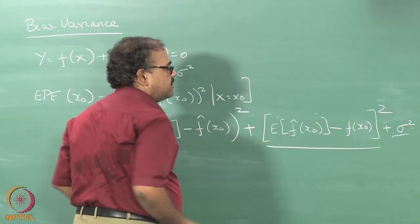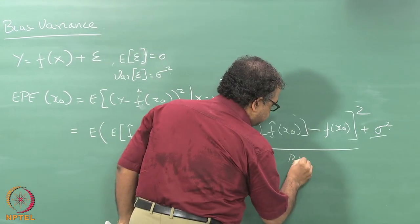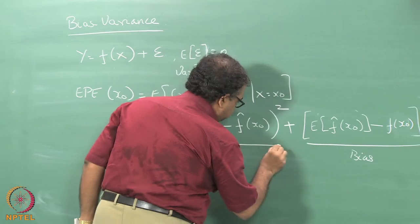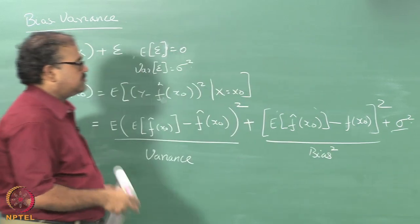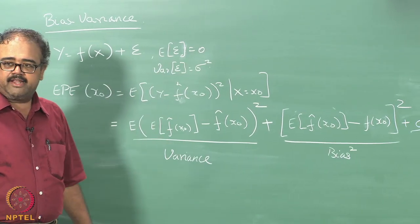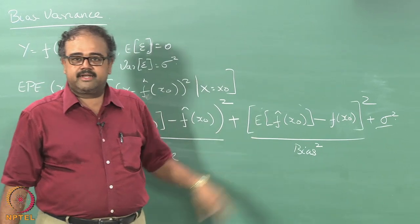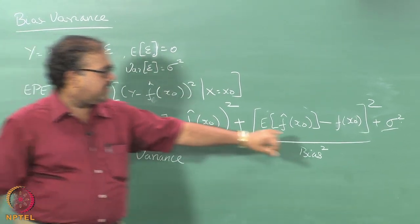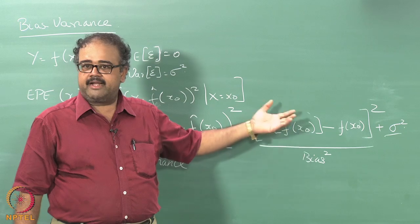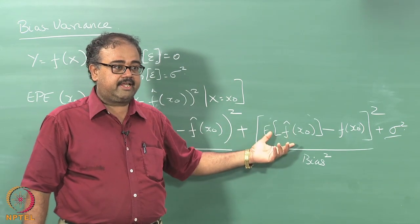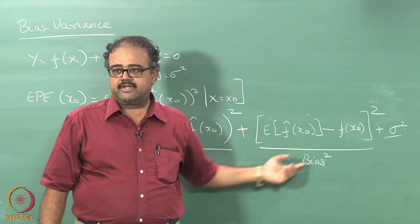This first term is typically called the variance of the estimator f-hat. This other term is called the bias of the estimator f-hat. One way to think about it is: f is my true function, and regardless of how much ever data I am getting, I expect to make at least this much error from the true function f. That is the bias.